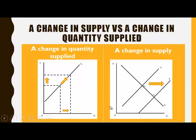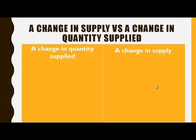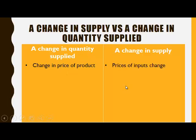Whereas a change in supply is illustrated by a shift of the supply curve. A change in the quantity supplied is caused by a change in the price of a product, while a change in supply can be caused by all the other factors that can affect supply.